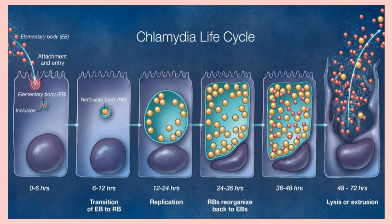Chlamydia are present as elementary bodies outside the cell. They attach to cells and enter by endocytosis. Inside the cell they are called inclusion bodies — these can be stained and seen by microscope for diagnosis. The elementary body inside the cell enlarges and forms a reticulate body. This reticulate body replicates and forms many other reticulate bodies. After some time, they transform back into elementary bodies, and the cell ruptures or undergoes exocytosis, releasing new elementary bodies which reinfect other cells.